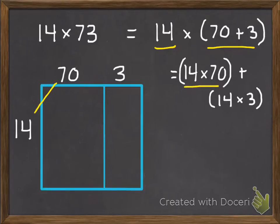So 14 times 70. Remember, when we write these, we want the number that has a 0 in the 1s to be on the bottom. So 14 times 70. Start with our 1s. 0 times 14 is going to be 0. Then, we multiply our 10s. 7 times 4 is 28. 7 times 1 is 7, plus our extra 2 is 9.